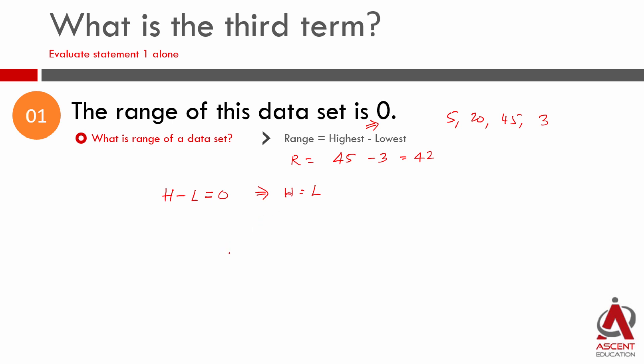Highest is equal to lowest means all terms are equal. So x is equal to y is equal to z. Highest minus lowest is 0. Now do we know any of these terms? Yes, the first term's value is 3. So the first term, second term, third term, all the terms will be the same, which is equal to 3. We found a unique value for the third term using statement 1. So statement 1 is definitely sufficient.